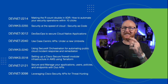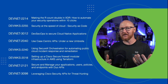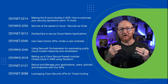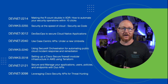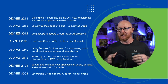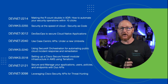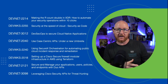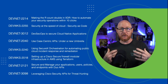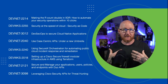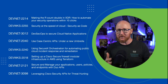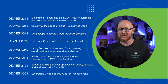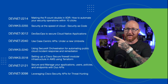First one is security at the speed of cloud, or security as code. We hear a lot about infrastructure as code at Cisco Live and other places — the idea of orchestrating your networked infrastructure using code, or rather developer tools. But why not do that to security too? You're going to want to check that one out.